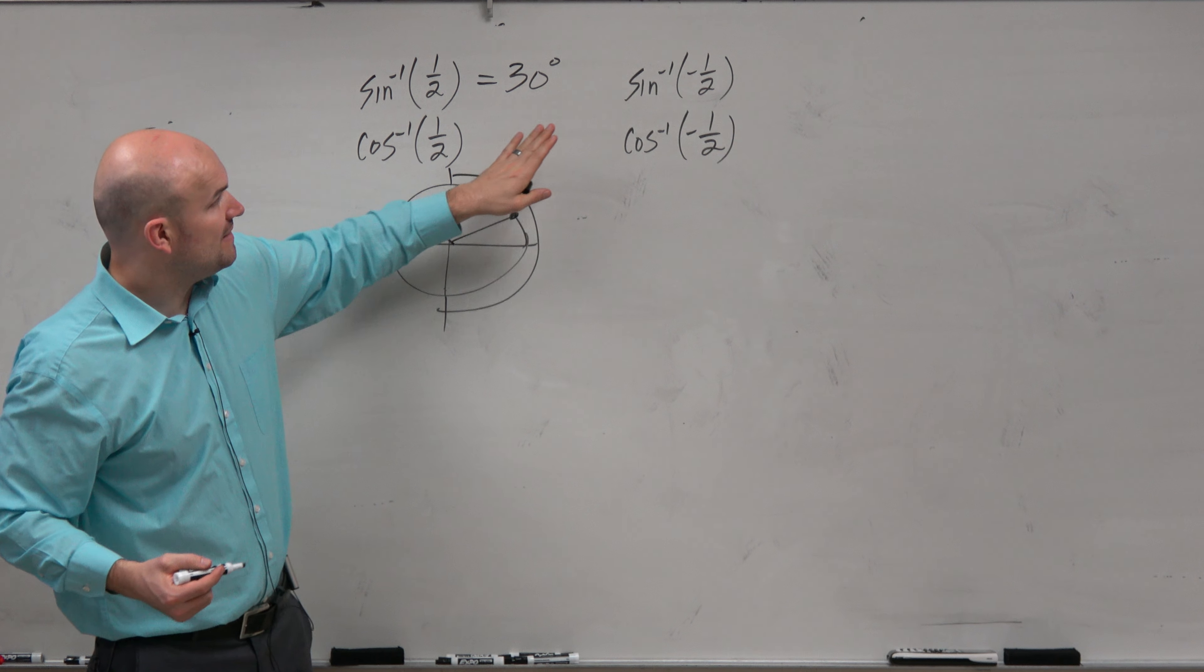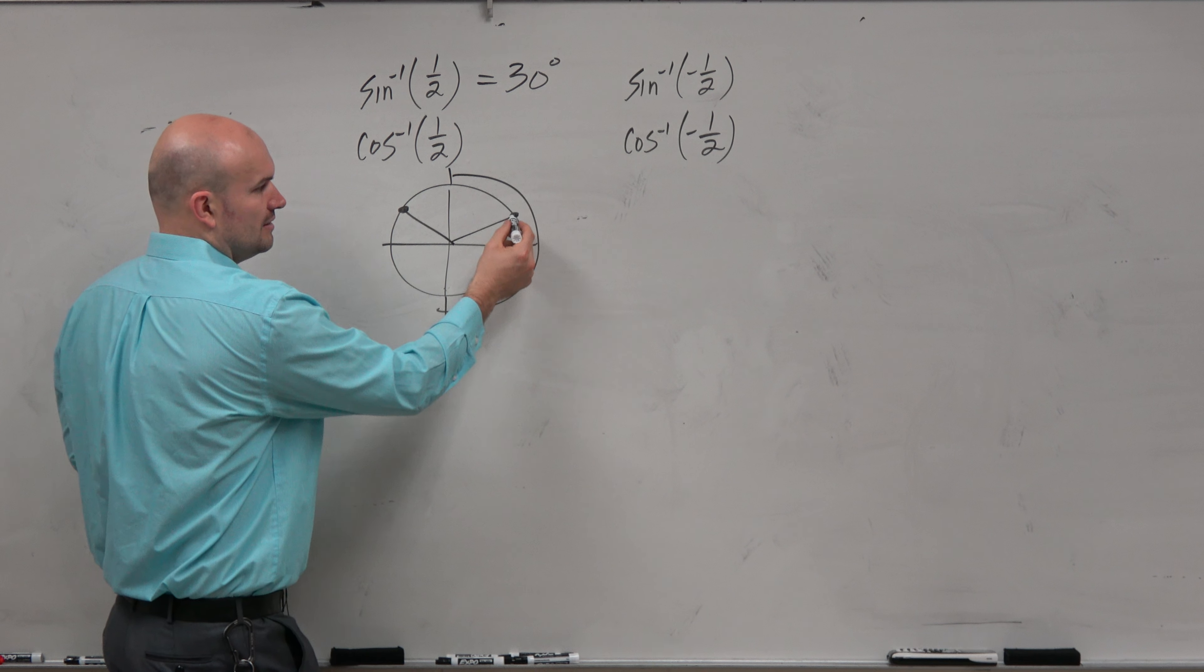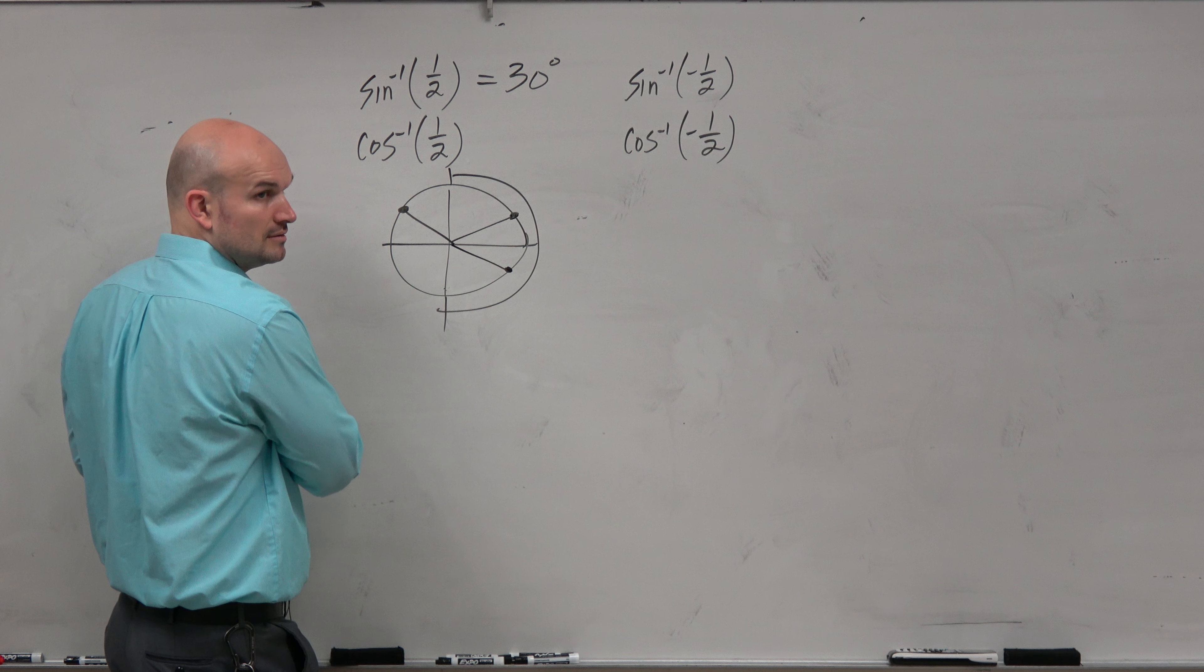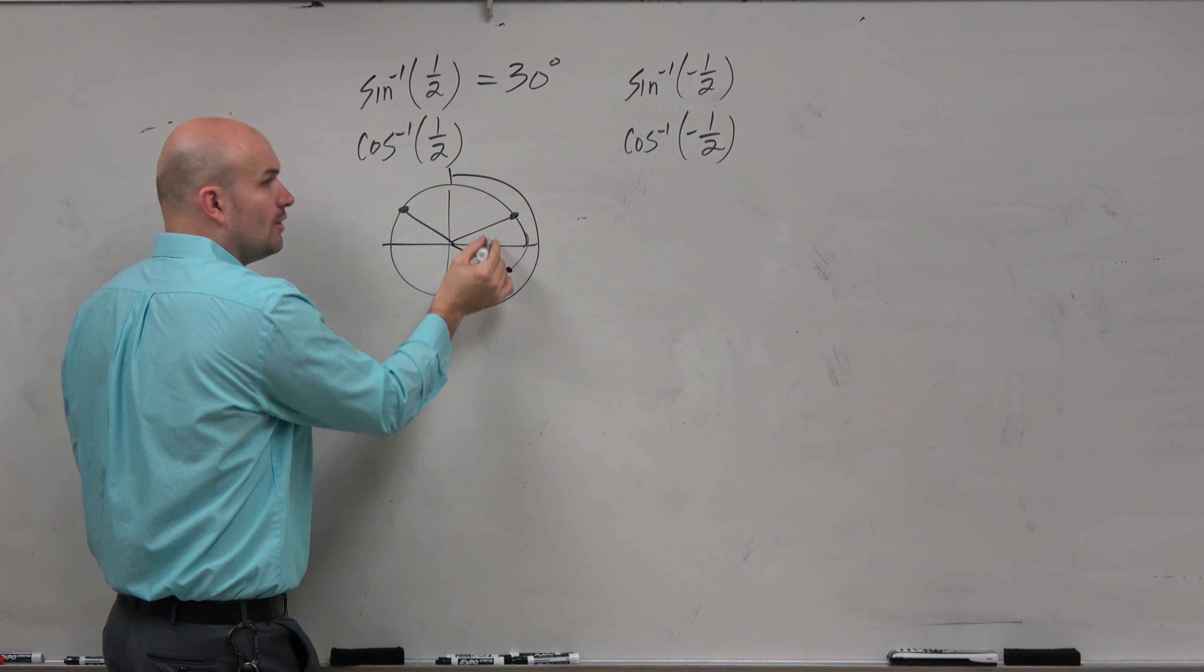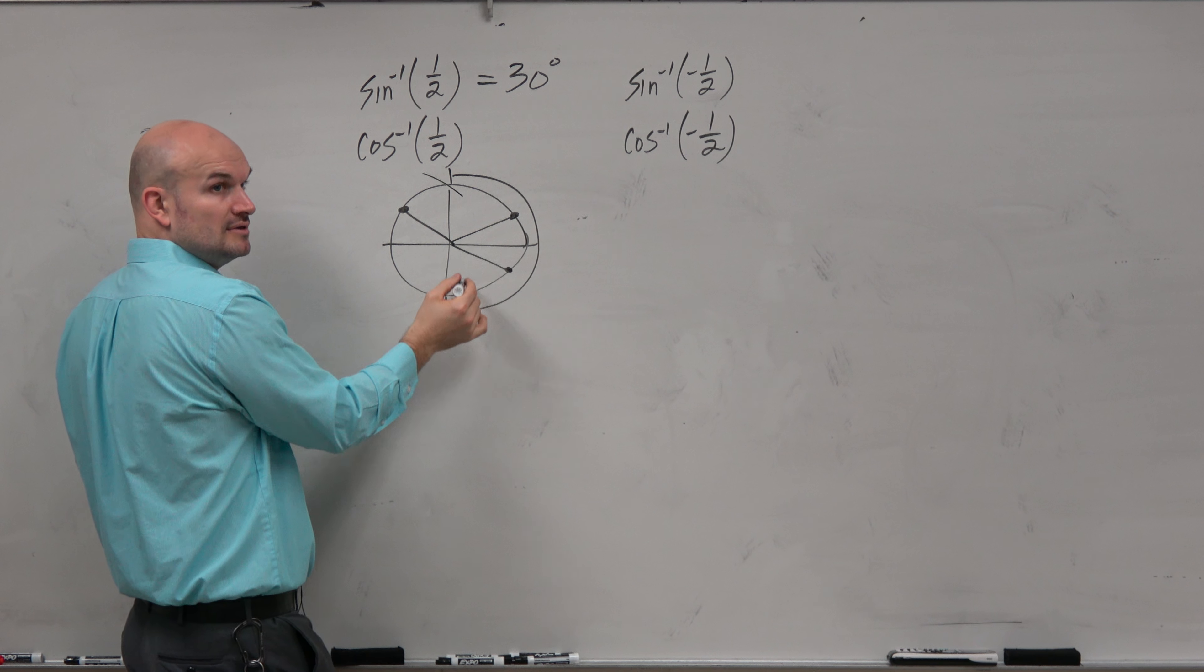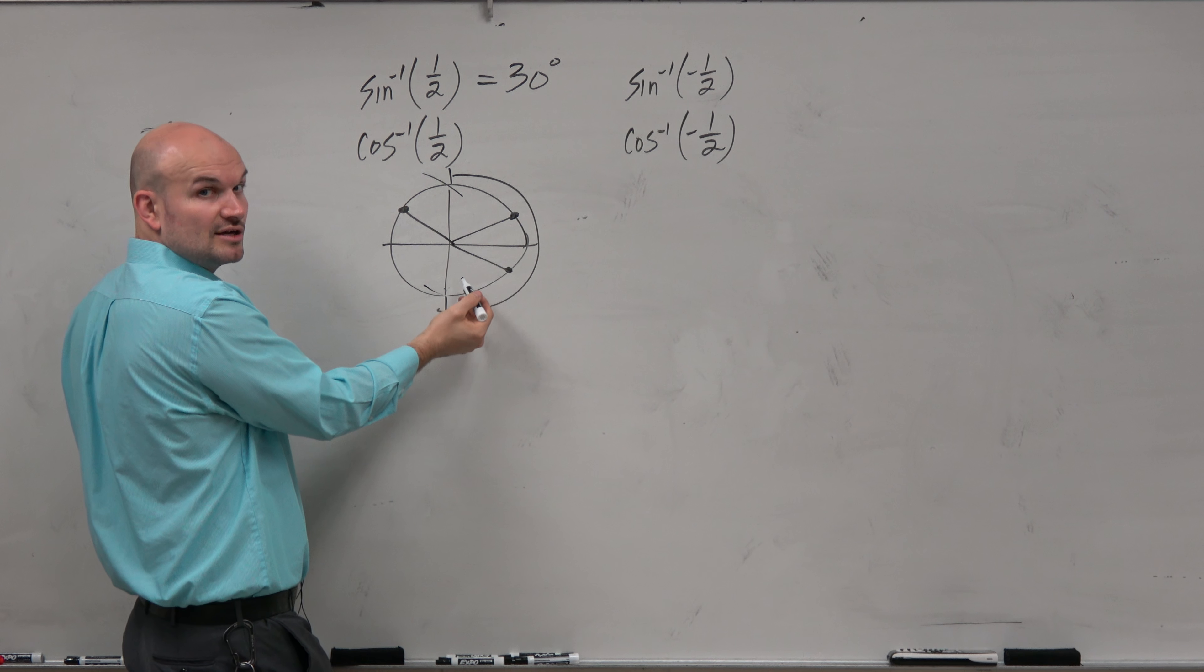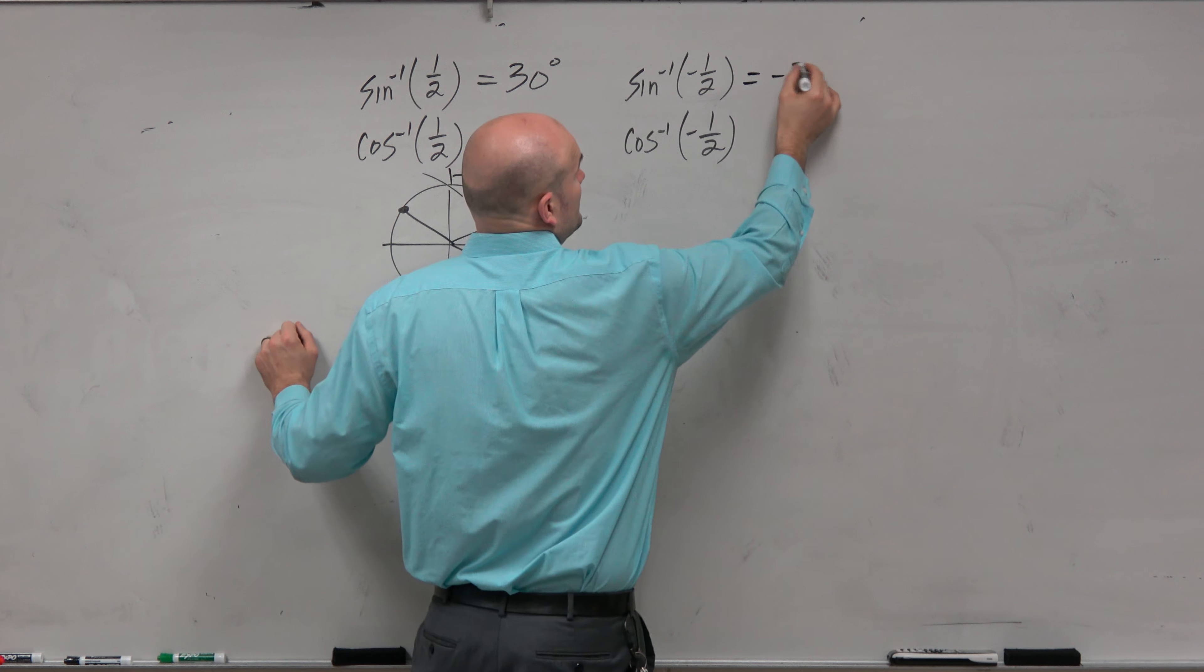OK. And then so negative 1 half is just going to be down here. You don't want to go outside of the restriction. You don't want to say 330 degrees. That goes outside of the restriction. So therefore, we use negative 30 degrees.